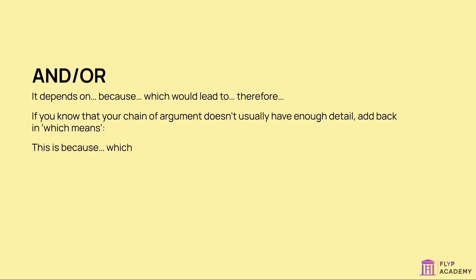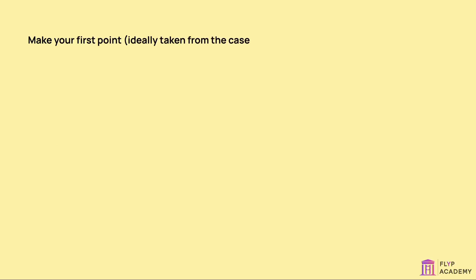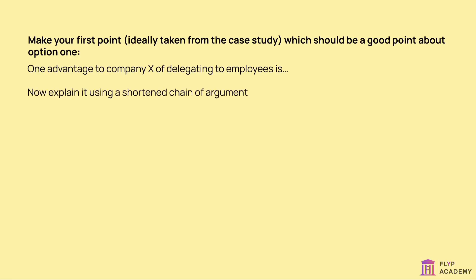Which means… Which would lead to… Which means… Therefore… Which means… Twelve marks – Analysis. Make your first point, ideally taken from the case study, which should be a good point about option 1. For example: 'One advantage to company X of delegating to employees is…' Now explain it using a shortened chain of argument: 'This is an advantage because… Which would lead to… Therefore…'